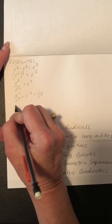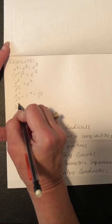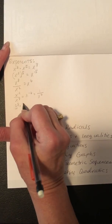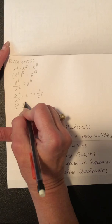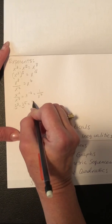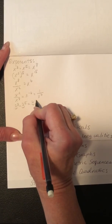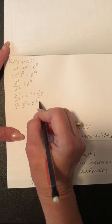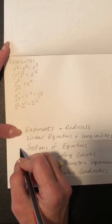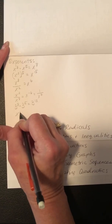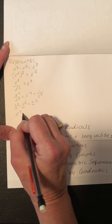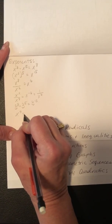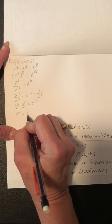This also works with numbers. If you have 3 to the 8th times 3 to the 5th, you get 3 to the 13th, because 8 plus 5 is 13. Also, any variable or number to the power of 0 is 1.